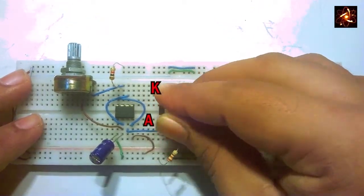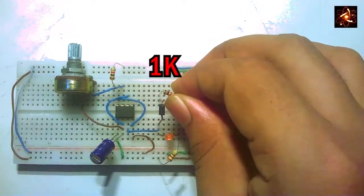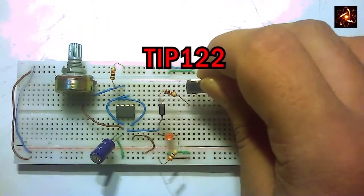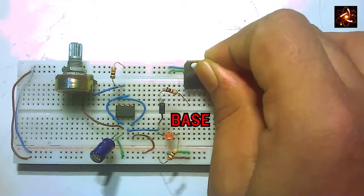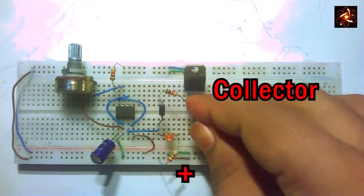The anode terminal is connecting in pin number 3 and the cathode terminal we add a 1k ohm resistor. The opposite side of the resistor is connected with the base pin of the transistor. The collector pin is connecting in the positive rail of the breadboard.